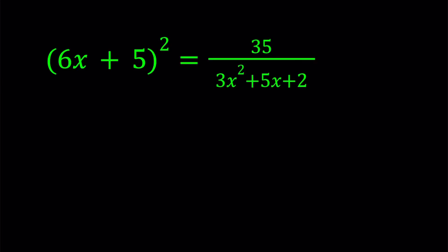Hello everyone. In this video we're going to be solving a rational equation. We have 6x plus 5 quantity squared equals 35 divided by 3x squared plus 5x plus 2.